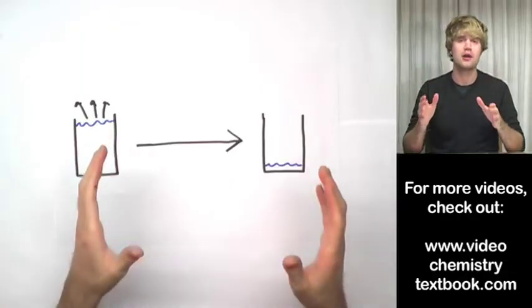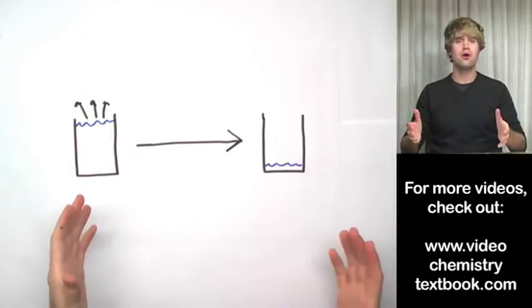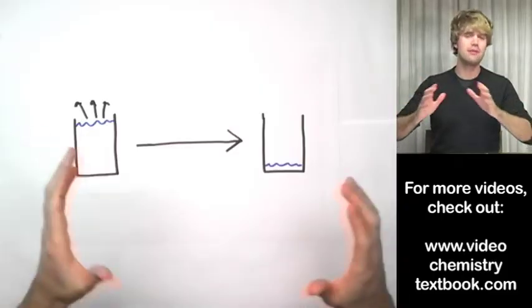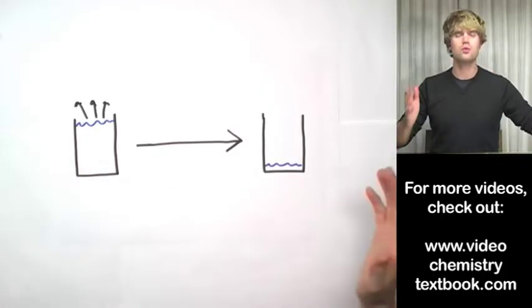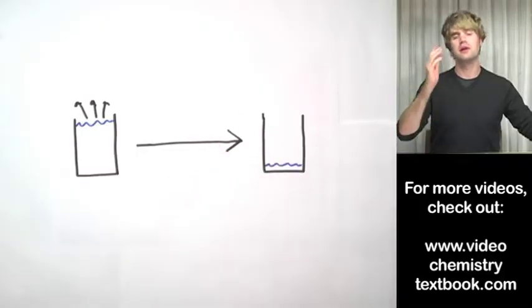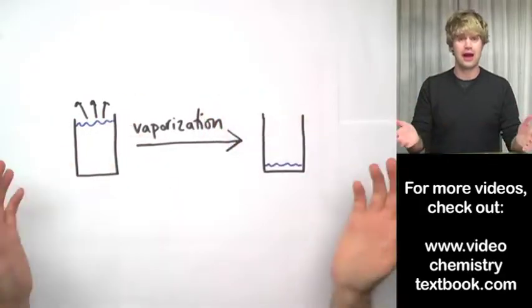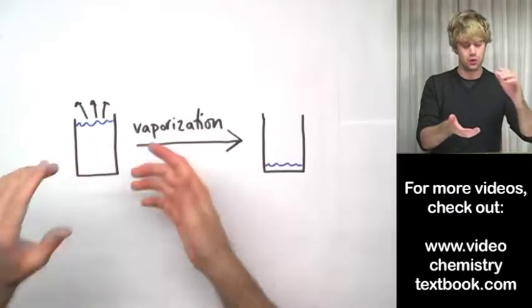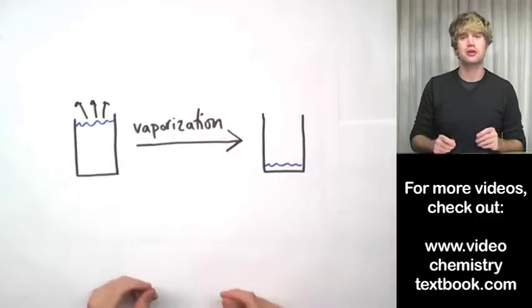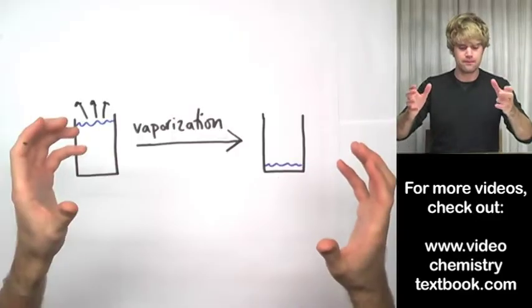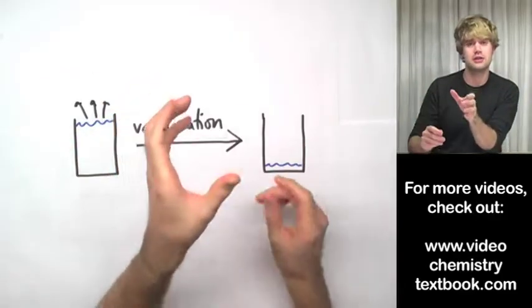This is evaporation and evaporation is a type of what we call vaporization. Vaporization is that kind of a catch-all term that we use anytime a liquid turns into a gas. The water disappearing from the glass of water overnight is an example of vaporization. So this is a real world example that you can actually see.